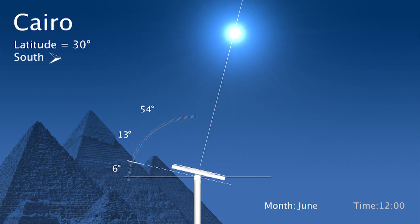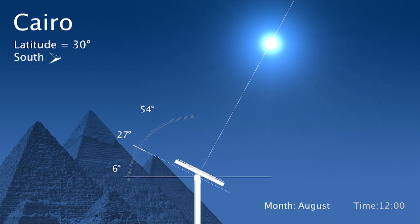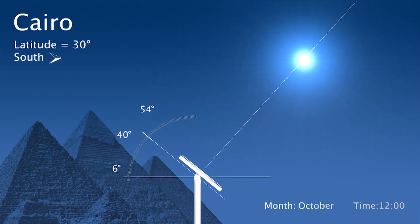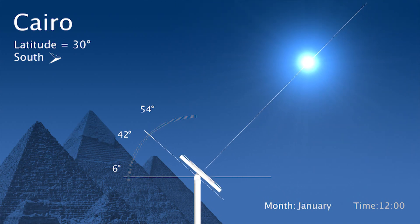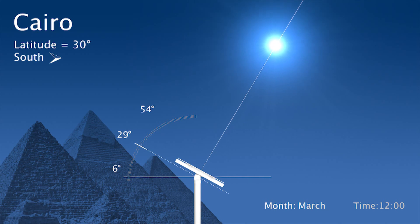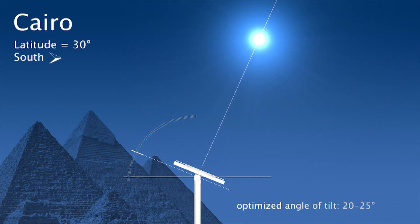Moving closer to the equator, we have Cairo at around 30 degrees latitude. We notice that the range of tilt angles has diminished to around 6 to 54 degrees. The optimized angle of tilt in such a case would be around 20 up to 25 degrees facing south.